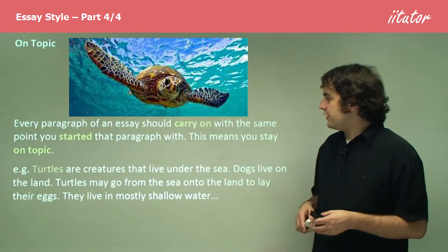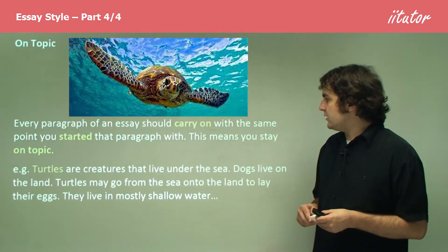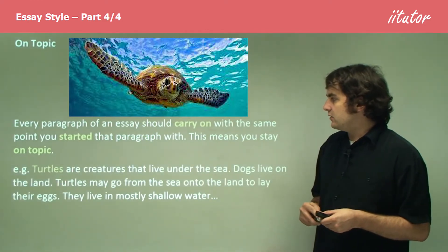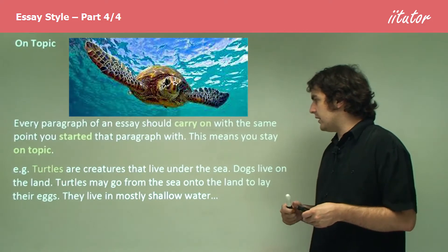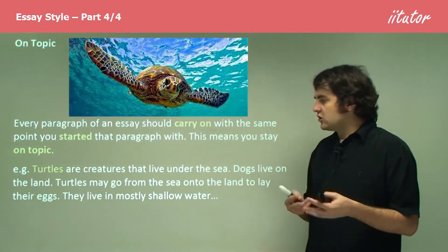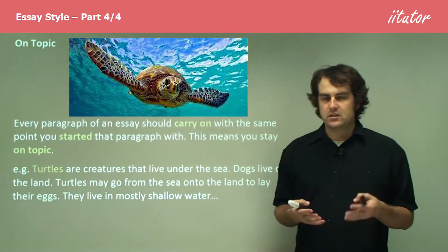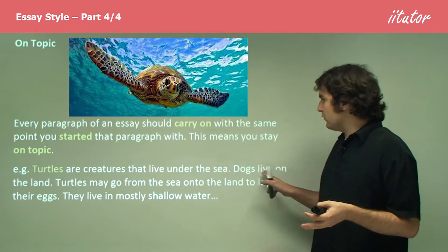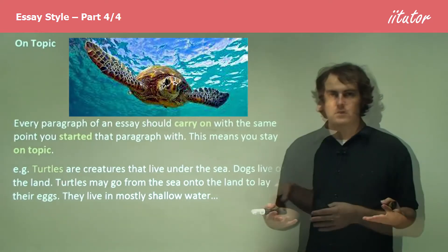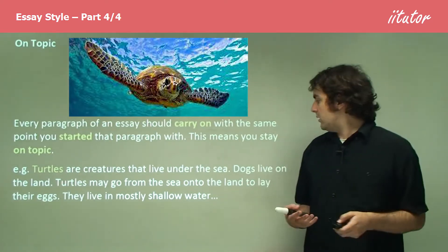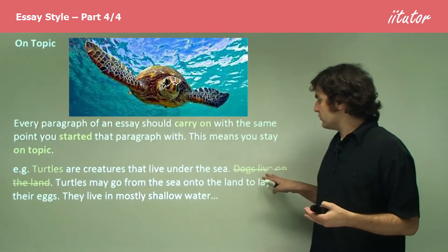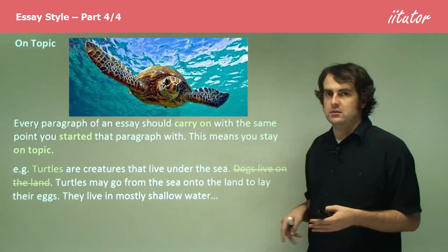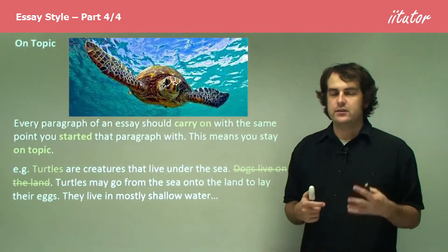Turtles are creatures that live under the sea. Dogs live on the land. Turtles may go from the sea onto land to lay their eggs. They live in mostly shallow water. There's a problem here. We've suddenly got, for no reason, dogs. Why are they there? Let's just do the right thing and cross them out, because they're not needed.